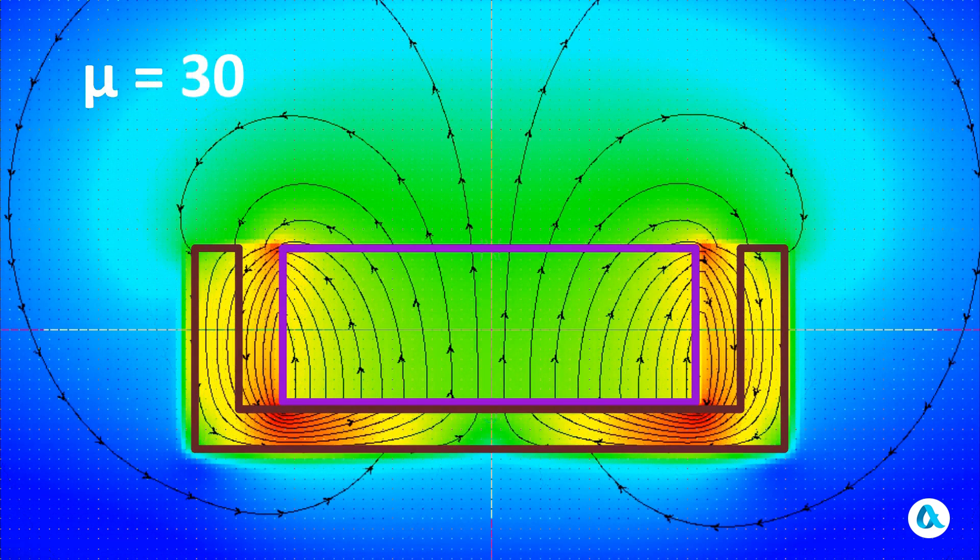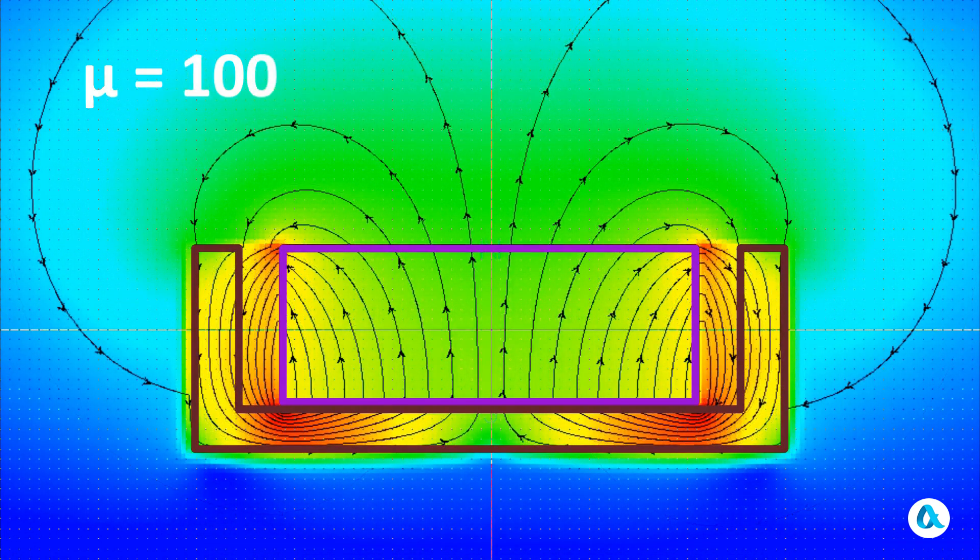At M equal to 30, the field under the shell weakened significantly. And with M equal to 100, a picture of the field interception was established that will not change any further.